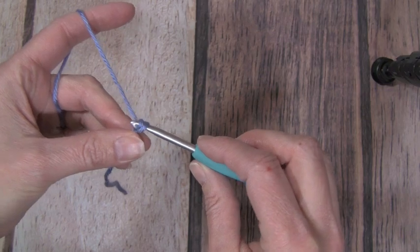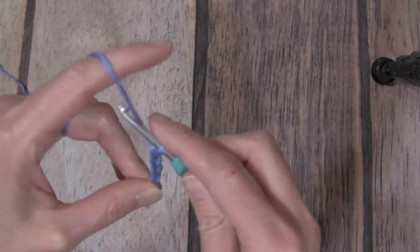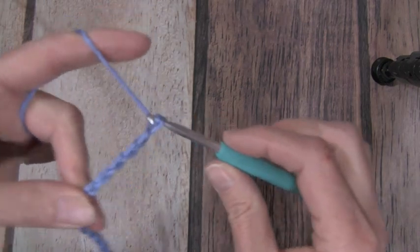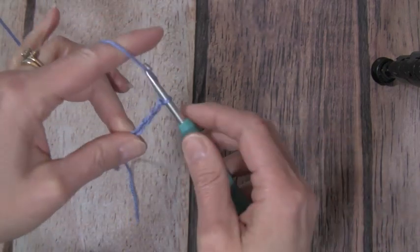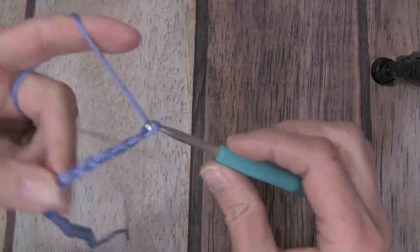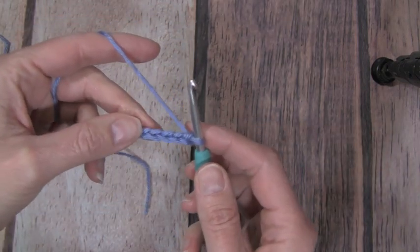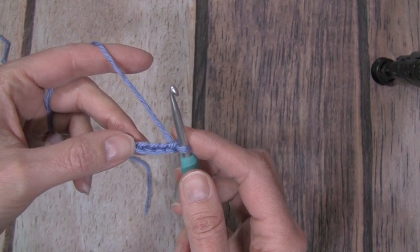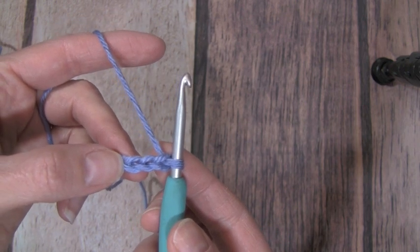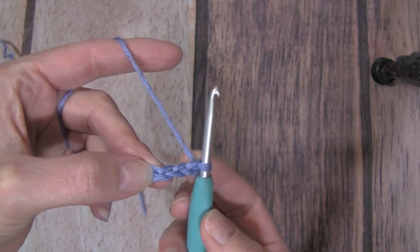I'm going to go ahead and chain 30. [Counting 1 through 30] I have an even number of chains to start out with and I'm going to do two double crochets in the fourth chain from the hook. We are going to count the chains away from the hook. 1, 2, 3, 4, and we are going to do two double crochets into that chain.